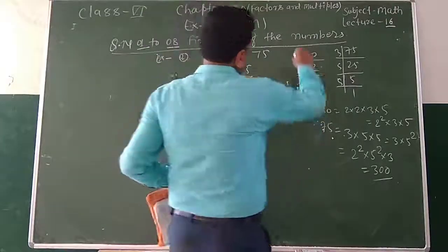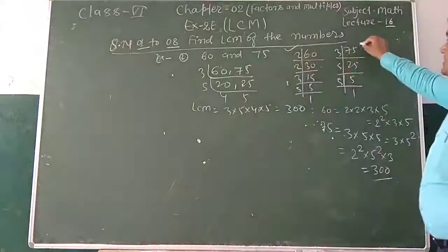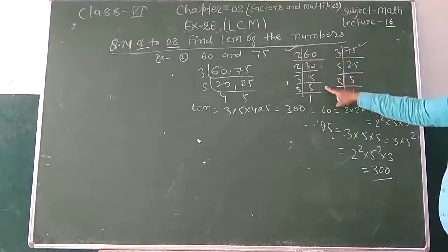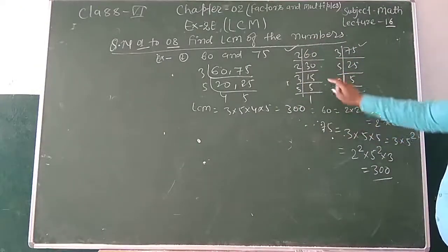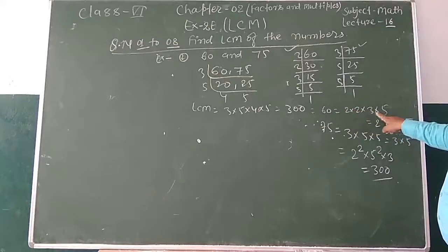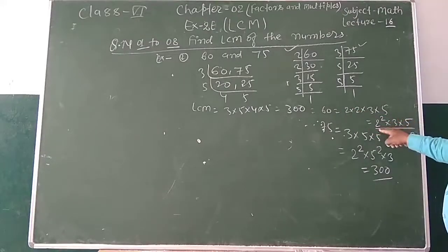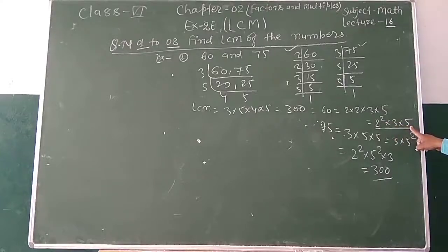So, if you want to take the same method, you can take the same method as factorization. I have told you that if you have factorized it, then it is equal to 3 into 5. Then it is equal to 2 to the power 2 into 3 into 5.